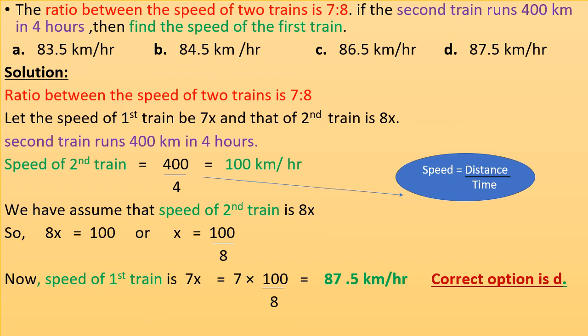We assumed the speed of the second train is 8x, so 8x = 100, or x = 100/8. Speed of the first train is 7x, so substituting: 7 × (100/8) = 87.5 km per hour. Correct option is D.